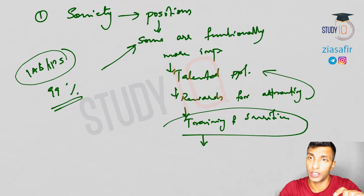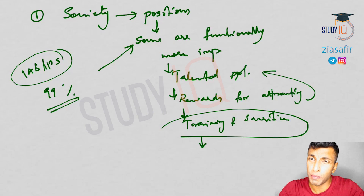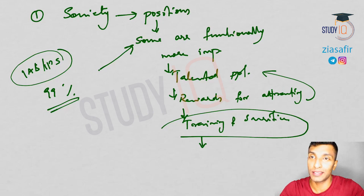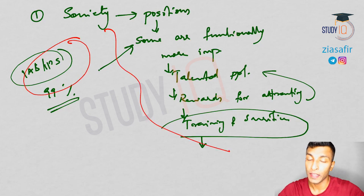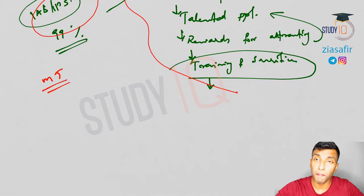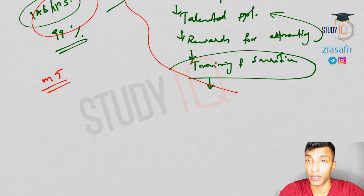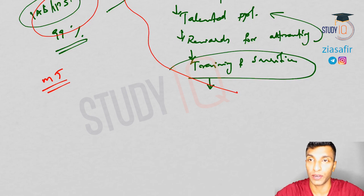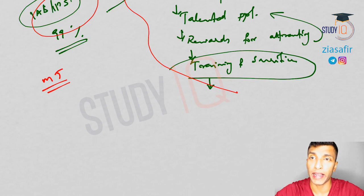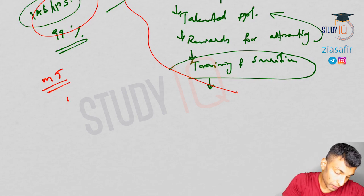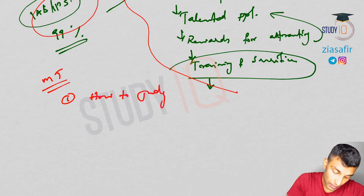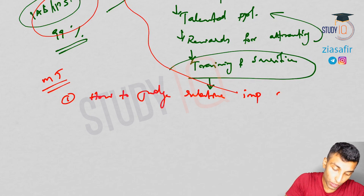Then Melvin Tumin raised certain objections. The first point he raises is: how do you judge the relative importance of a position? You are saying some are functionally more important, but how can you judge the relative importance? For example, talking about a doctor and a teacher — without a teacher, a doctor will not be there; without a doctor, a teacher cannot survive in case of a problem. So how can you judge the relative importance of a position? That involves some value judgment, some bias. This is the first question raised by Melvin Tumin.